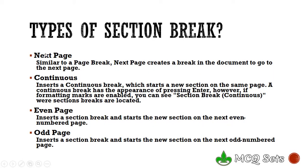So to summarize: next page section break — the new section will start on another page. If you insert continuous kind of section break, the new section will start right from where the insertion line was placed. Even page will start a new section on the next even page number available. Odd page will start a new section on the next odd numbered page. So these four kinds of section breaks are there in MS Word.